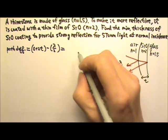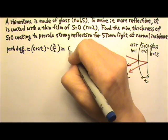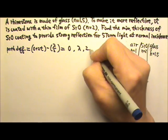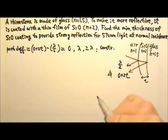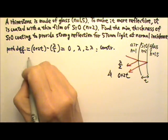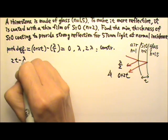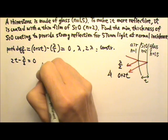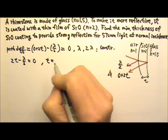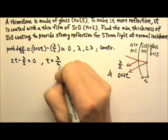For constructive interference, this will equal to 0, lambda, 2 lambda, that kind of number for constructive interference. So this will be 2T minus half-lambda, we're going to use 0 first. And this works because what we get is T equals lambda over 4.